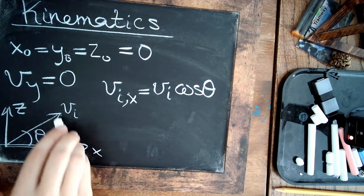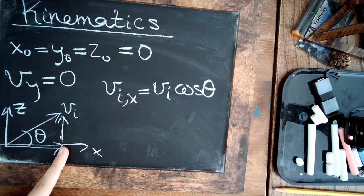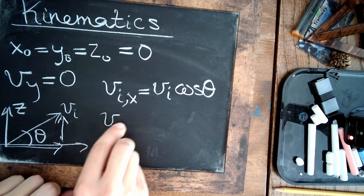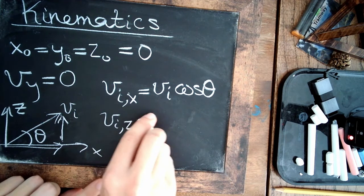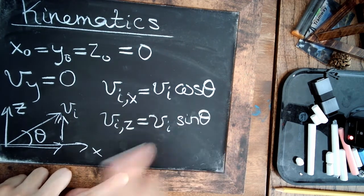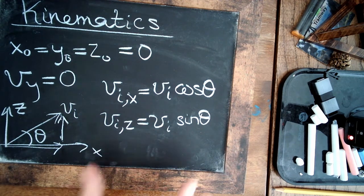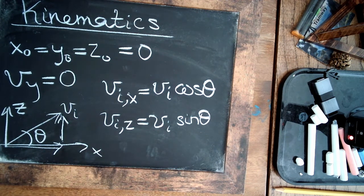is just going to be the initial velocity total times the cosine of that angle that we find. And the vertical part, which would be this arrow, is how fast it's traveling in the z direction. So v initial z is the total v initial times the sine of that angle. So that's just some basic right triangle trick. So this is all we need to plug all this into the computer.